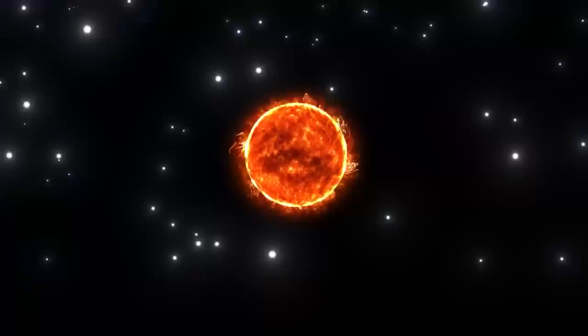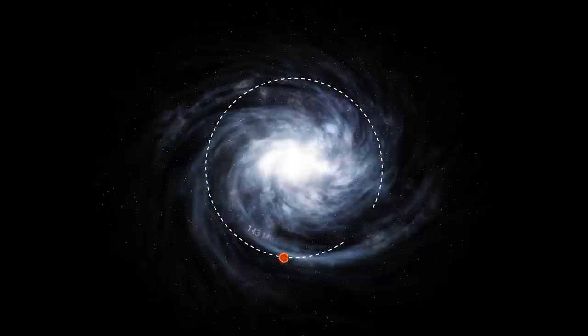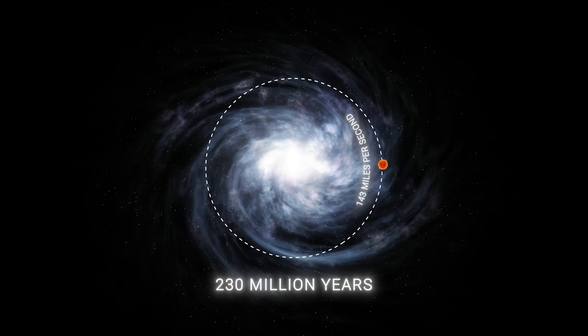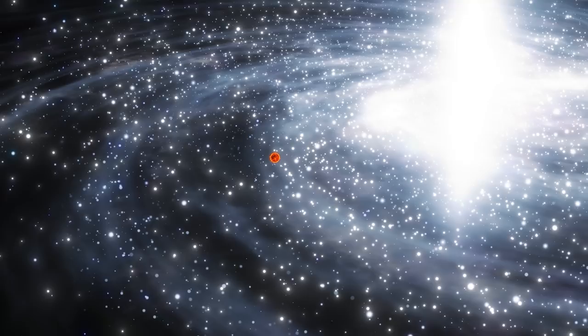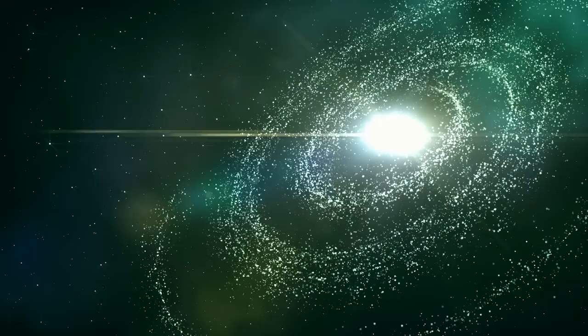Just as Earth orbits the Sun, the Sun revolves around the center of the Milky Way galaxy at a speed of about 143 miles per second, completing one orbit in almost 230 million years. This cosmic journey takes the Sun, and therefore also Earth, through different regions of the galaxy, and introduces us to different cosmic environments.